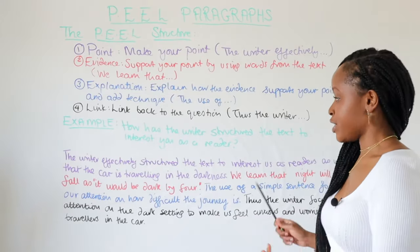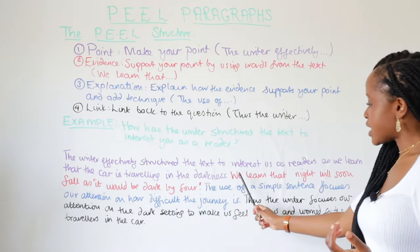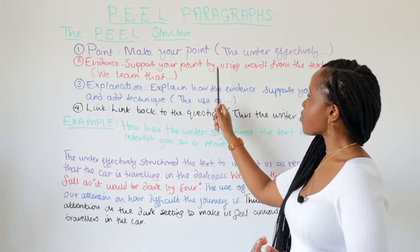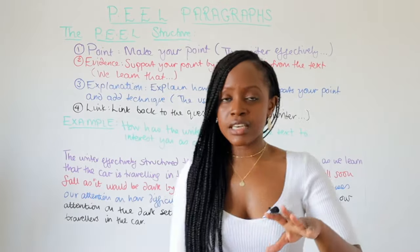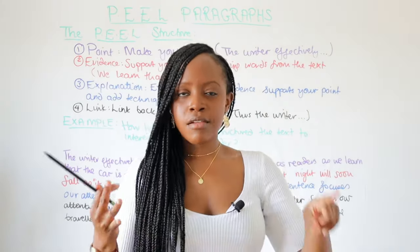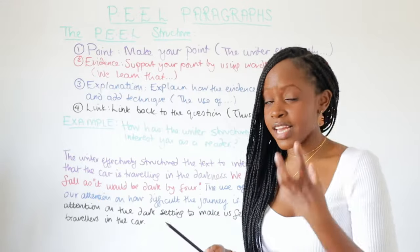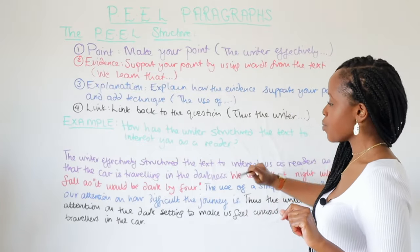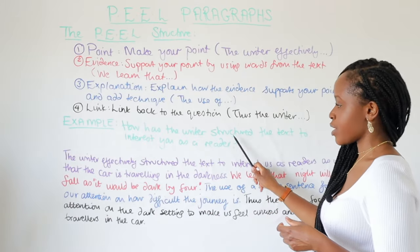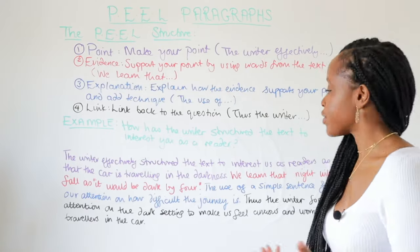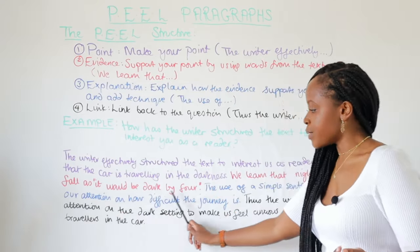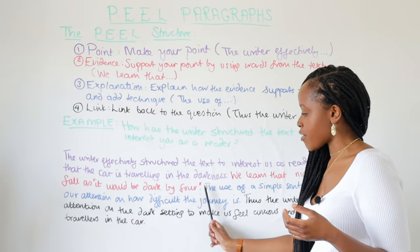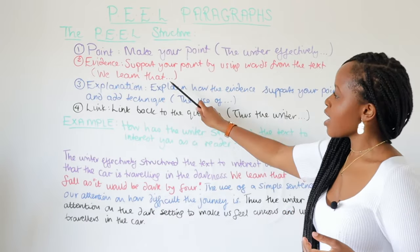Here is my example paragraph: 'The writer effectively structures the text to interest us as readers, as we learn that the car is traveling in the darkness.' In the purple Point section I've begun with 'the writer effectively' — this works whether the text is a play, novel, poem, or short extract. If there are two sources, you can use 'the writers' plural. Then for Evidence: 'We learn that night will soon fall, as it would be dark by four.' I've embedded the evidence — 'it would be dark by four' in speech marks — making it flow as part of the sentence.